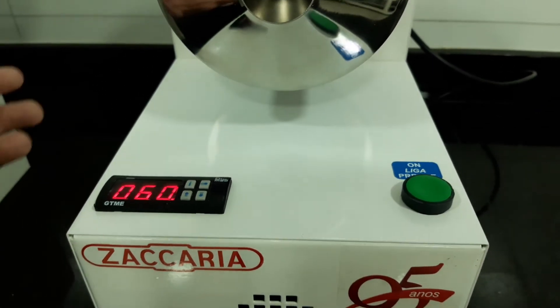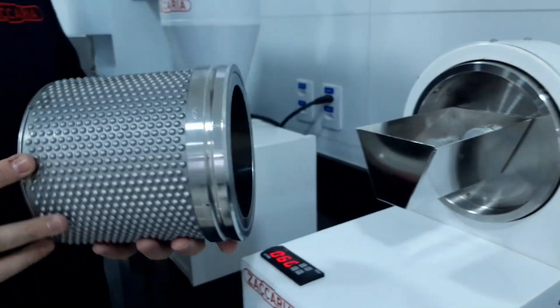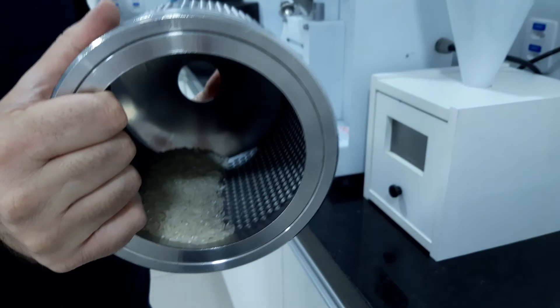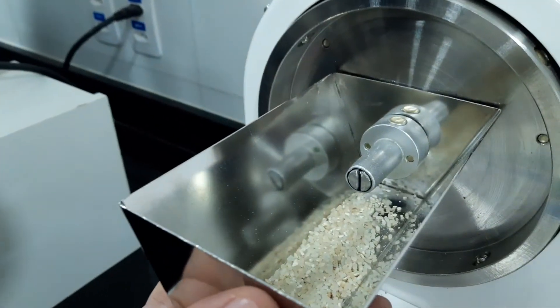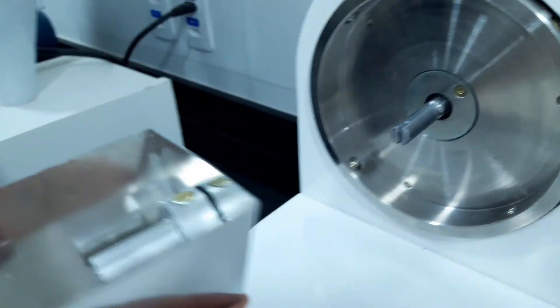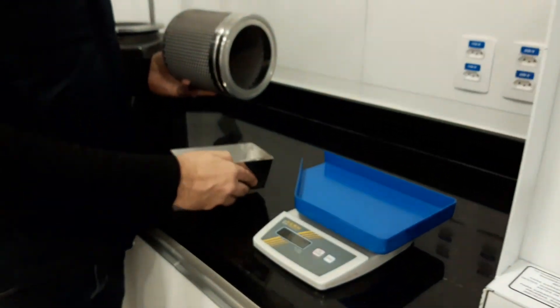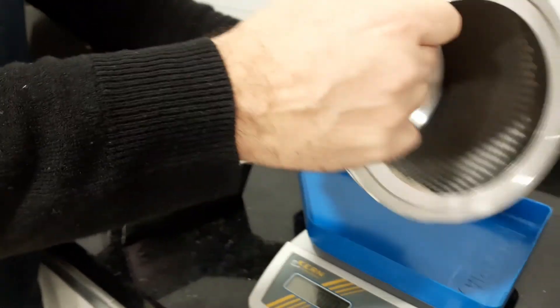When the time is out, the machine stops by itself. We can remove the cylinders. The whole grain stays inside the cylinders, and the broken goes inside of this tray. So this tray we take off, and we will measure the whole grain.